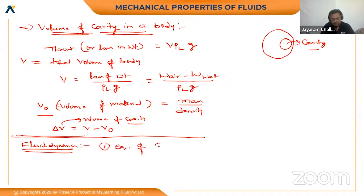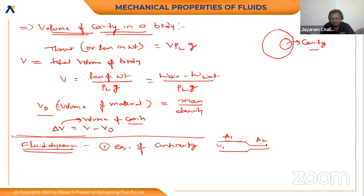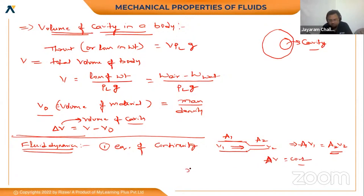The equation of continuity: if a liquid is flowing through a pipe with area of cross-section A1 and then A2, traveling at velocity v1 and coming out at velocity v2, then the equation of continuity is A1 v1 equals A2 v2, or A times v equals constant. In terms of radius: r1 squared into v1 equals r2 squared into v2. Next, we also have Poiseuille's equation and Bernoulli's theorem.